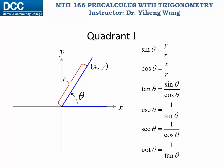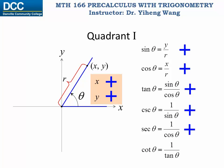If the terminal side of our angle theta falls in the first quadrant, then for any point on this terminal side it will have both positive x and y coordinates. And since r is a distance, it is always positive. Therefore sine theta being y over r is positive, cosine theta being x over r is also positive, tangent theta is also positive, and the same thing for cosecant theta, secant theta, and cotangent theta. In other words, if an angle has a terminal side that falls in the first quadrant, all six trigonometric function values are positive.